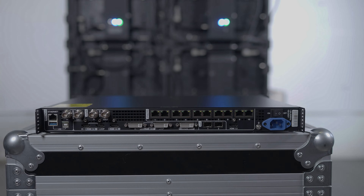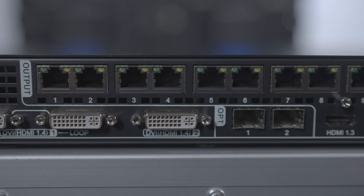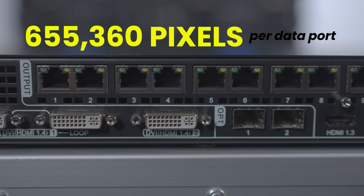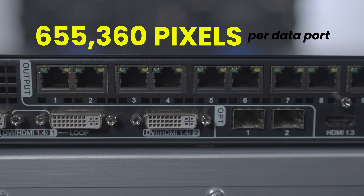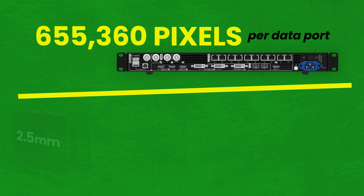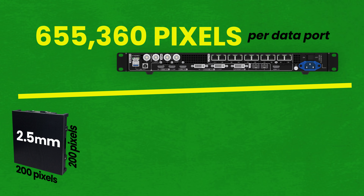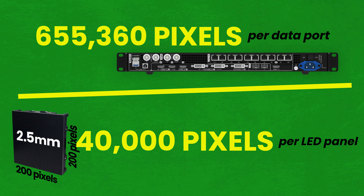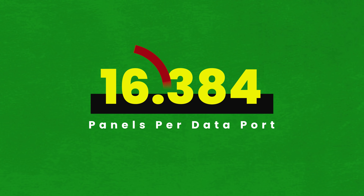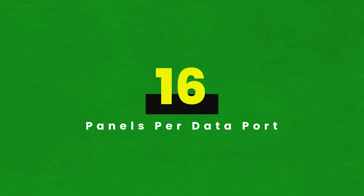A single data port on the back of a Novastar processor can support a max of 655,360 pixels — I'll say pixels from here on out. Divide that total number of pixels per port by the number of pixels on just one LED panel, and that will tell you the maximum number of panels you can connect off of one data port.